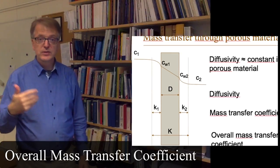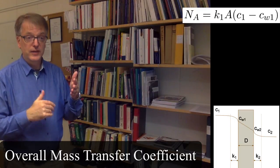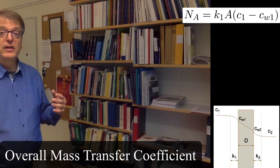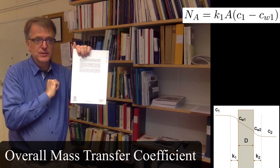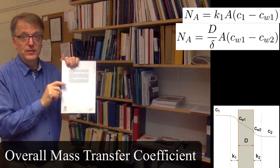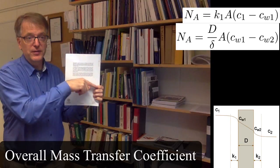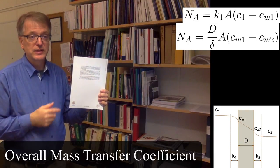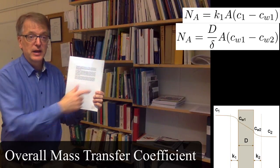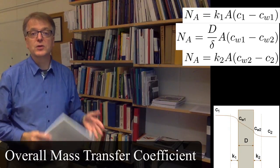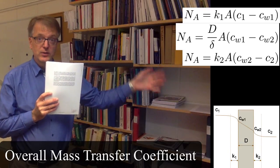To the surface, we have the mass transfer coefficient times the area times the difference in concentration in the bulk — far away — and very close to the surface. Through the material, we have the diffusivity divided by the thickness times the concentration difference between one side and the other, times the area. On the other side, the molar transport must equal the mass transfer coefficient on that side times the area times the concentration difference from the interface out into the bulk.